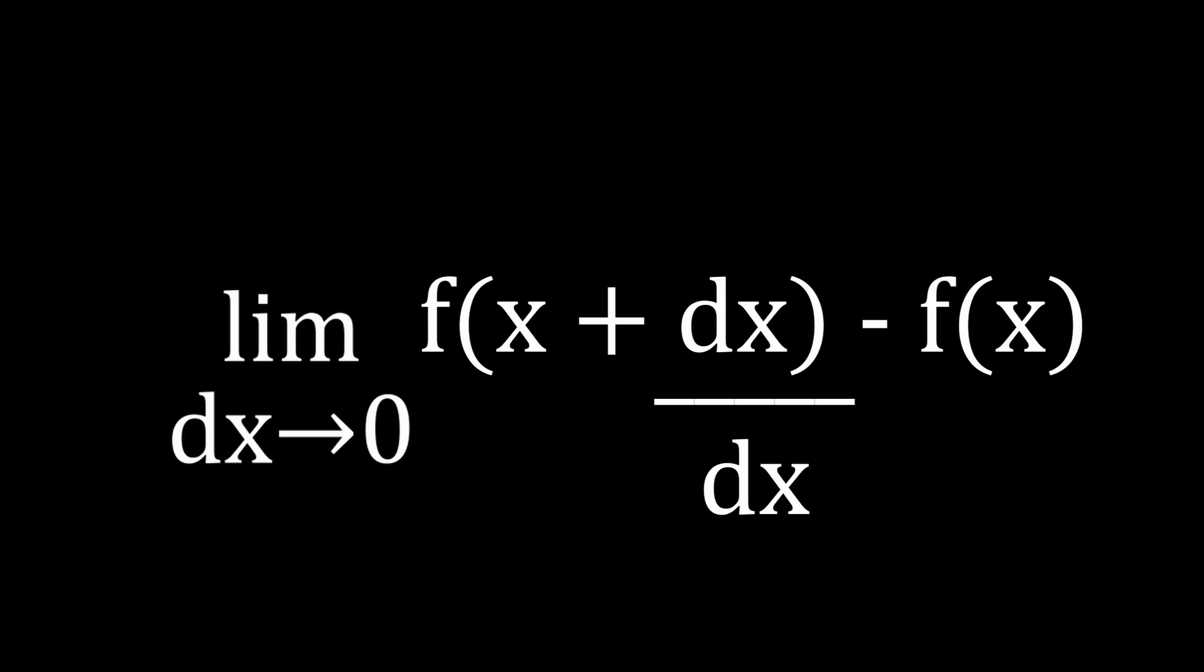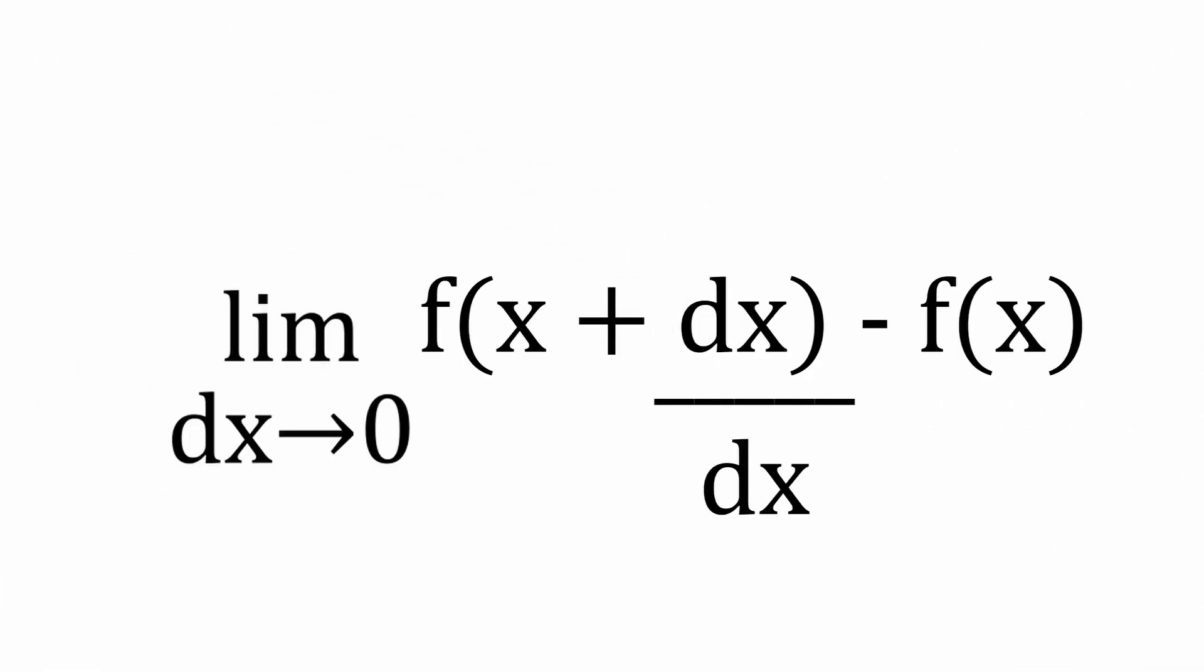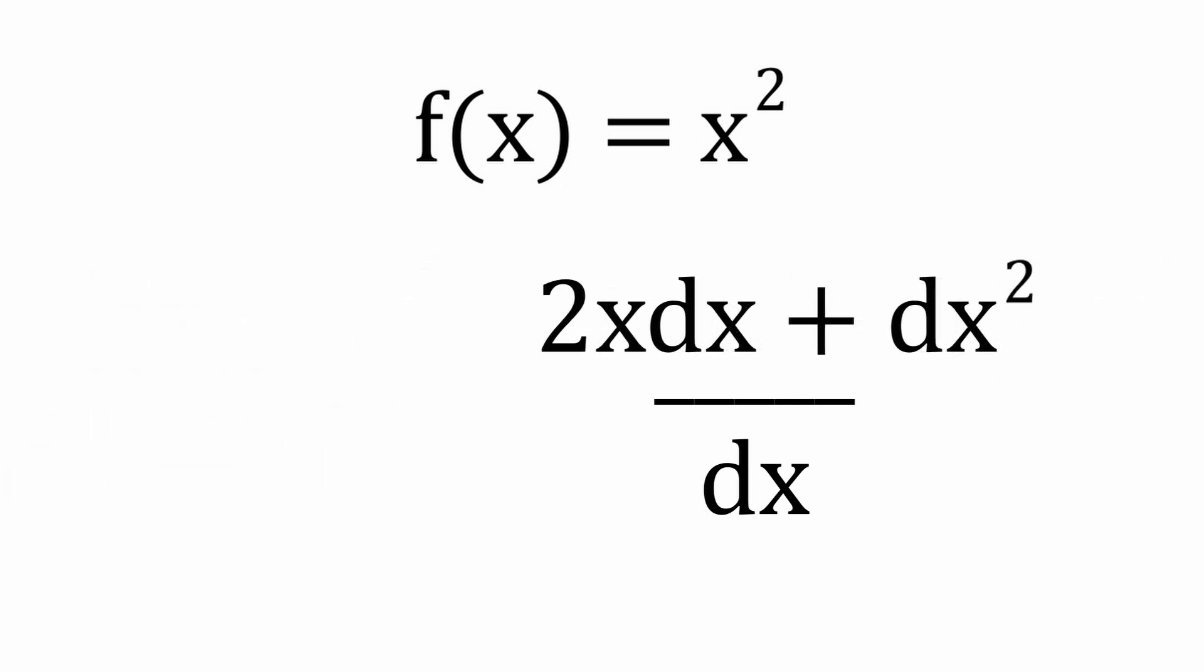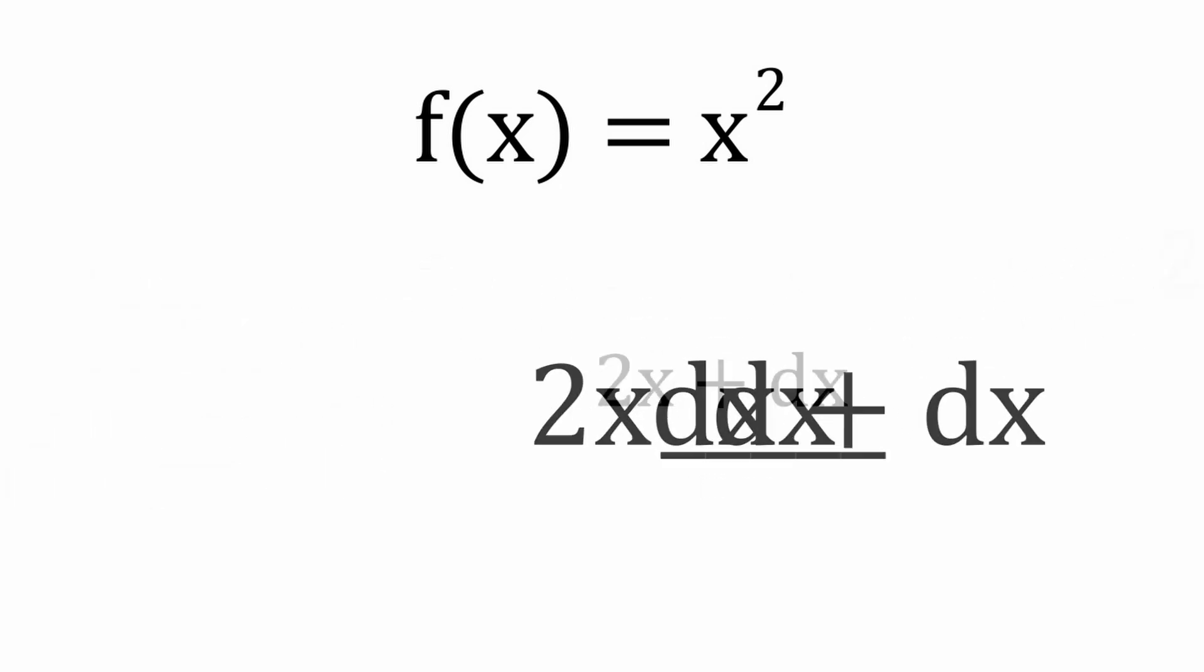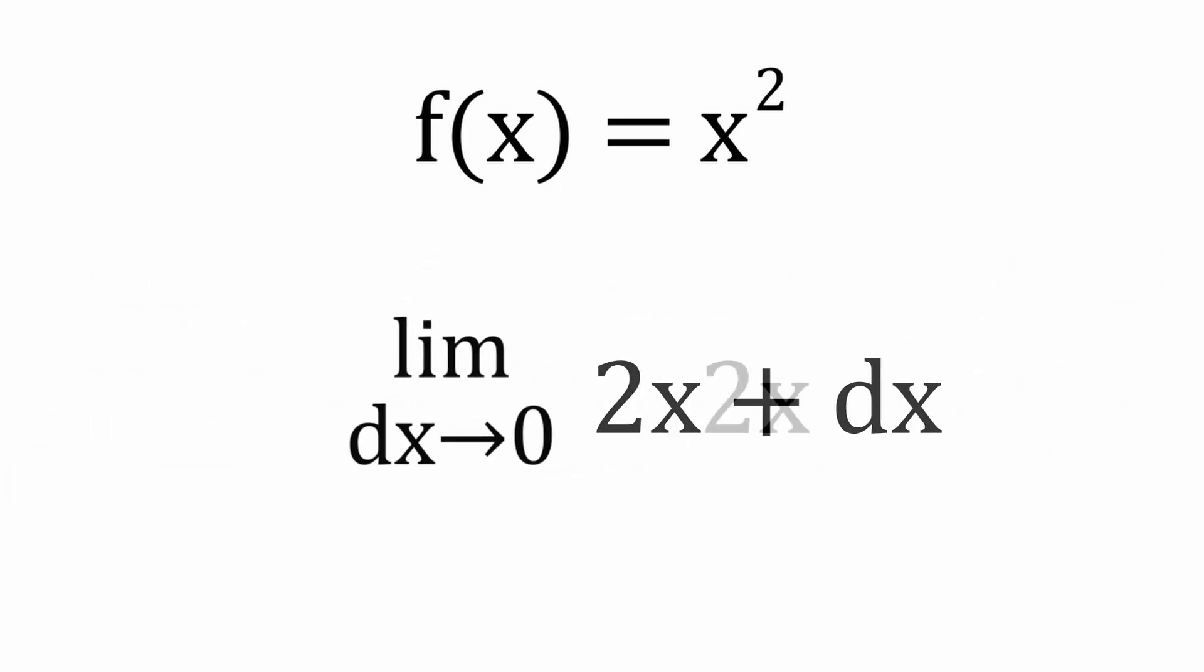What does it actually do? Let's use an example and put the standard parabola through this operation. We can apply the functions, collect the terms, divide by dx, and shrink the remaining dx to zero, where we are left with 2x.